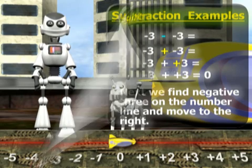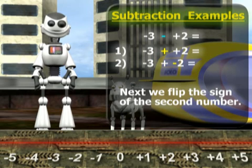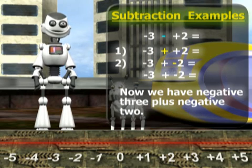Here's another. Okay, first we flip the sign from negative to positive. Next, we flip the sign of the second number. Now we have negative three plus negative two.